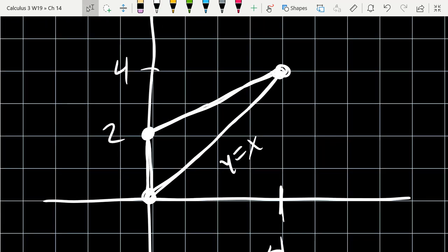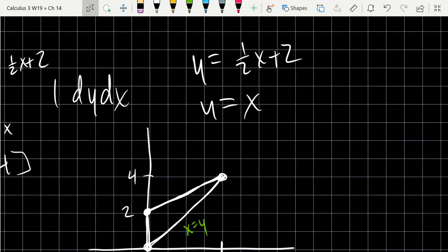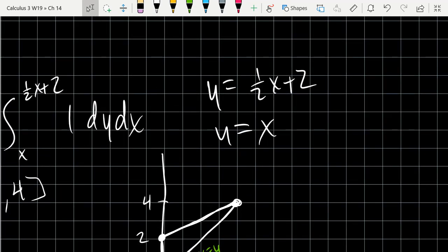So I have to solve the equations for x. So the bottom equation, we have x equals y. And then the top equation, I'm going to multiply by 2. So we have 2y equals x plus 4. Subtract 4. 2y minus 4 equals x.